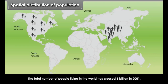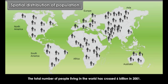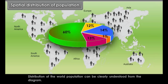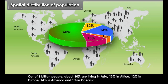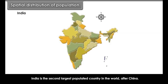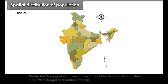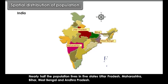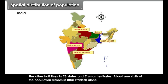The total number of people living in the world crossed 6 billion in 2001. Out of 6 billion people, about 60% are living in Asia, 13% in Africa, 12% in Europe, 14% in America, and 1% in Oceania. India is the second largest populated country in the world after China. Nearly half the population lives in 5 states: Uttar Pradesh, Maharashtra, Bihar, West Bengal and Andhra Pradesh. About one-sixth of the population resides in Uttar Pradesh alone.